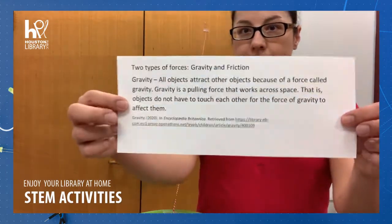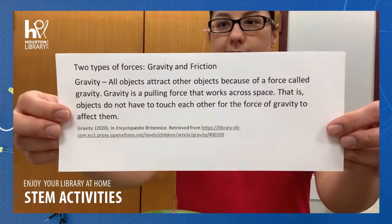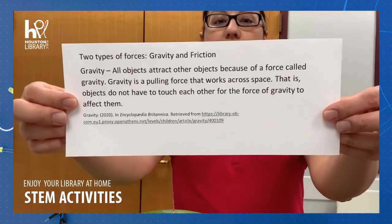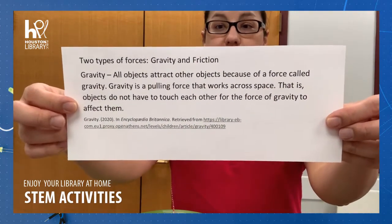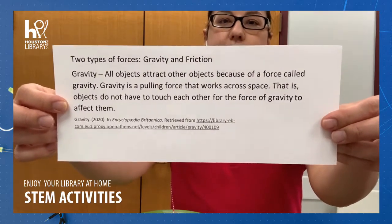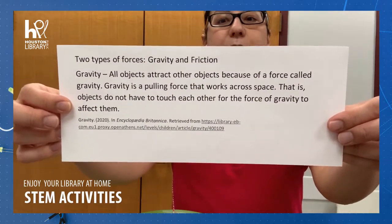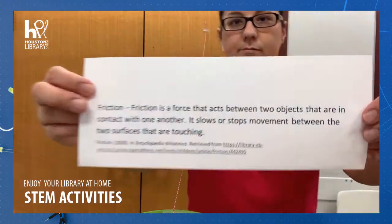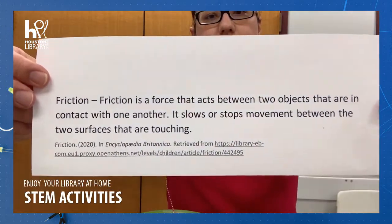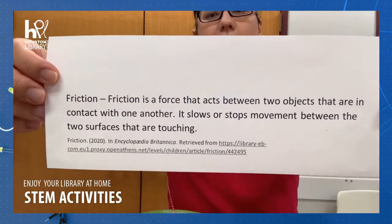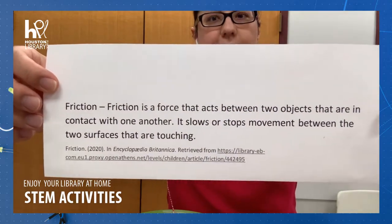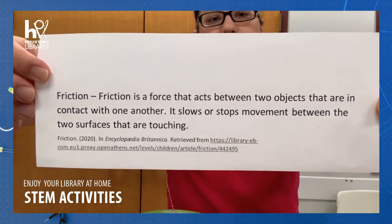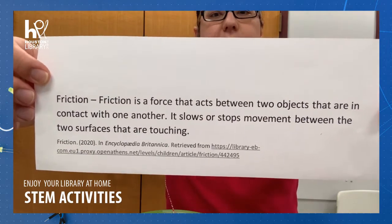You probably already know about gravity, but here's the definition just in case. All objects attract other objects because of a force called gravity. Gravity is a pulling force that works across space — objects do not have to touch each other for gravity to affect them. Friction is a force that acts between two objects that are in contact with one another, unlike gravity. It slows or stops movement between the two objects that are touching.